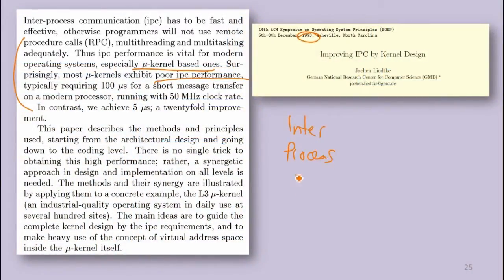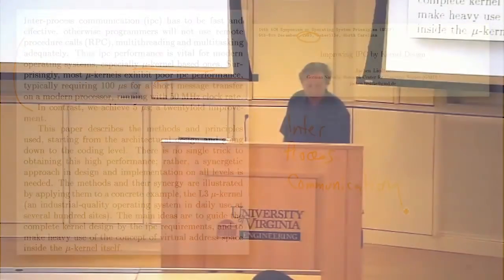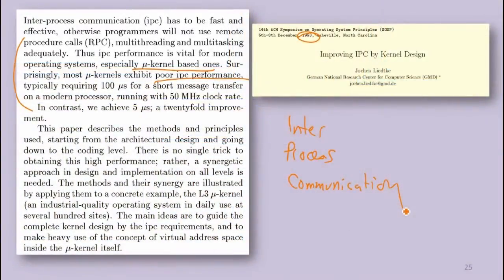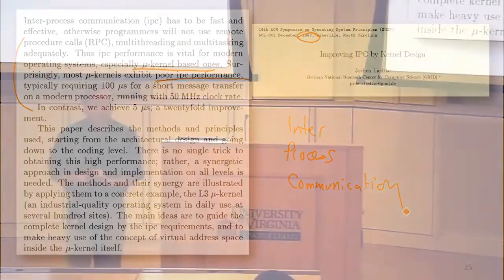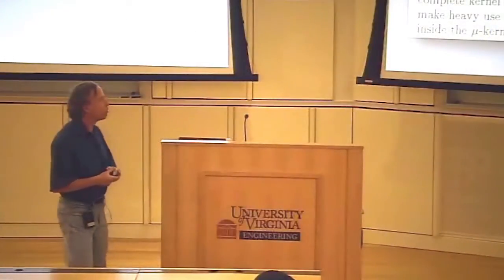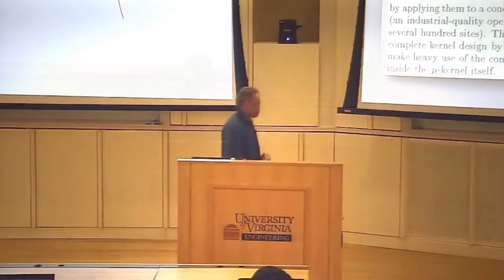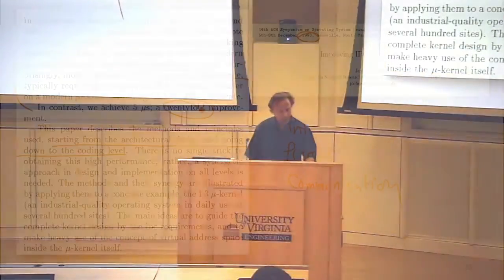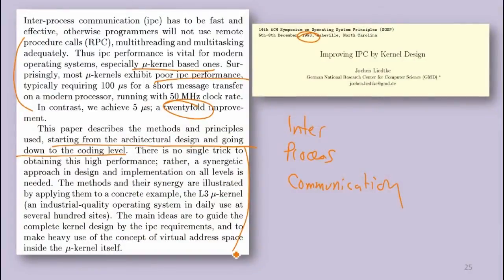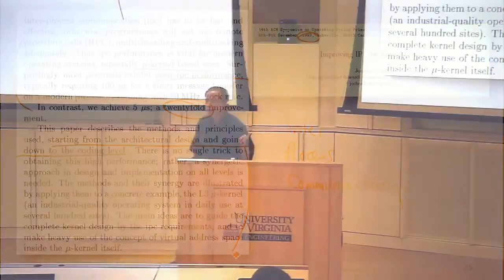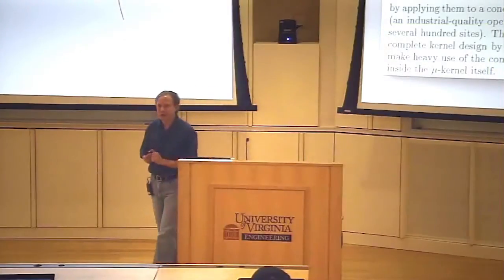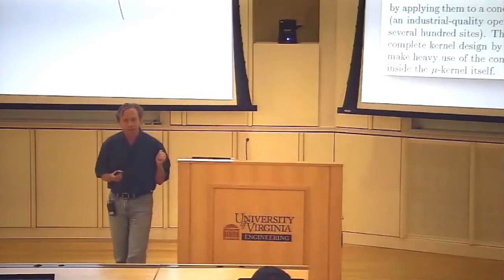IPC stands for inter-process communication. The paper was actually about L3, but it evolved into many other operating systems including L4, which is the main one running on your devices. The whole design was based around making IPC fast, and they were able to get it about 20 times faster than other microkernels that had already tried to optimize it, like Mach.